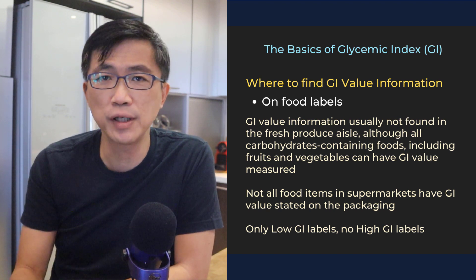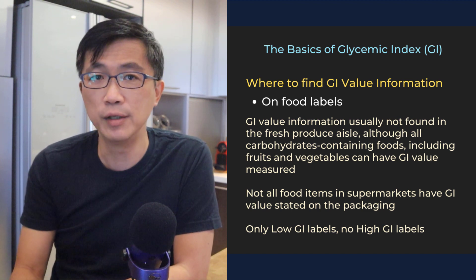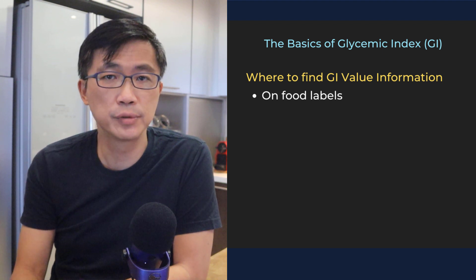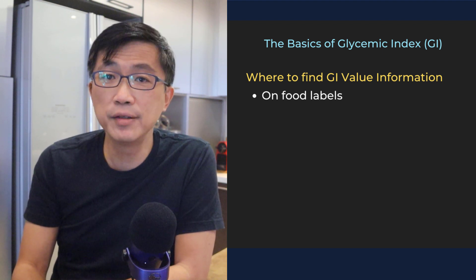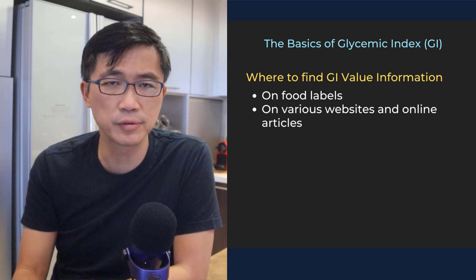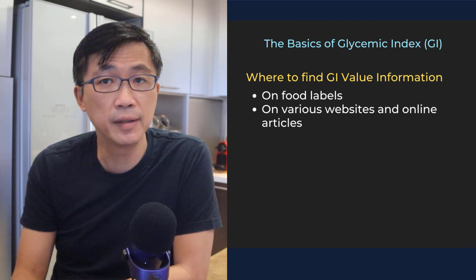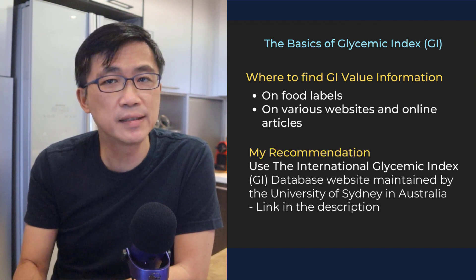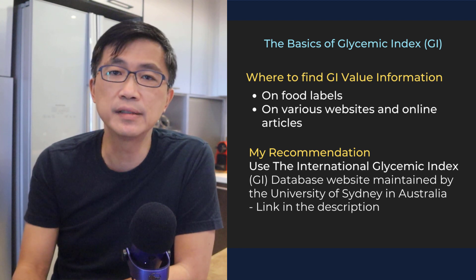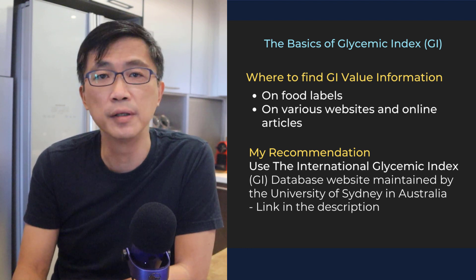You would also typically not find GI value labels on fruits and vegetables in the fresh produce aisles, even though all of them have a GI value if they had been sent for testing. So, other than on food labels, where else can you find GI information? I would recommend that you use the International Glycemic Index database website maintained by the University of Sydney in Australia. It has the largest, most updated database of almost every food product ever tested from all the different labs around the world. Let me show you an example.